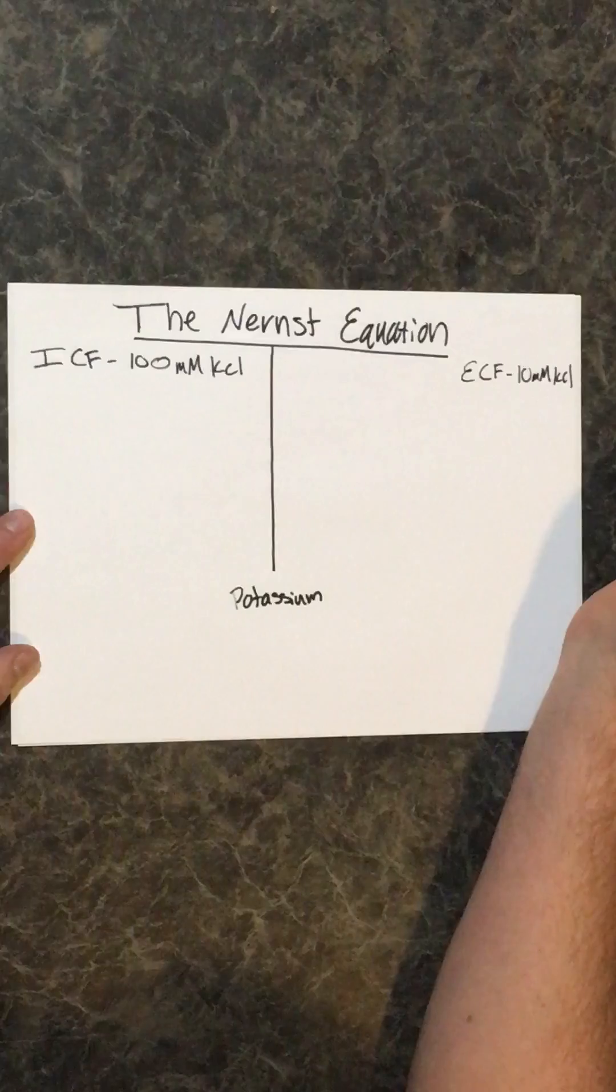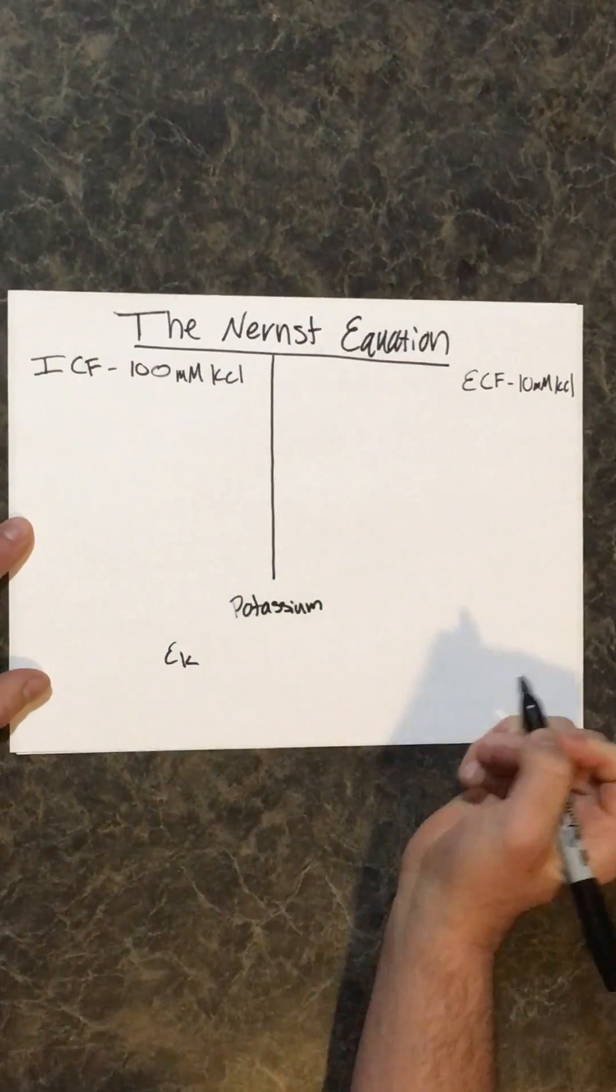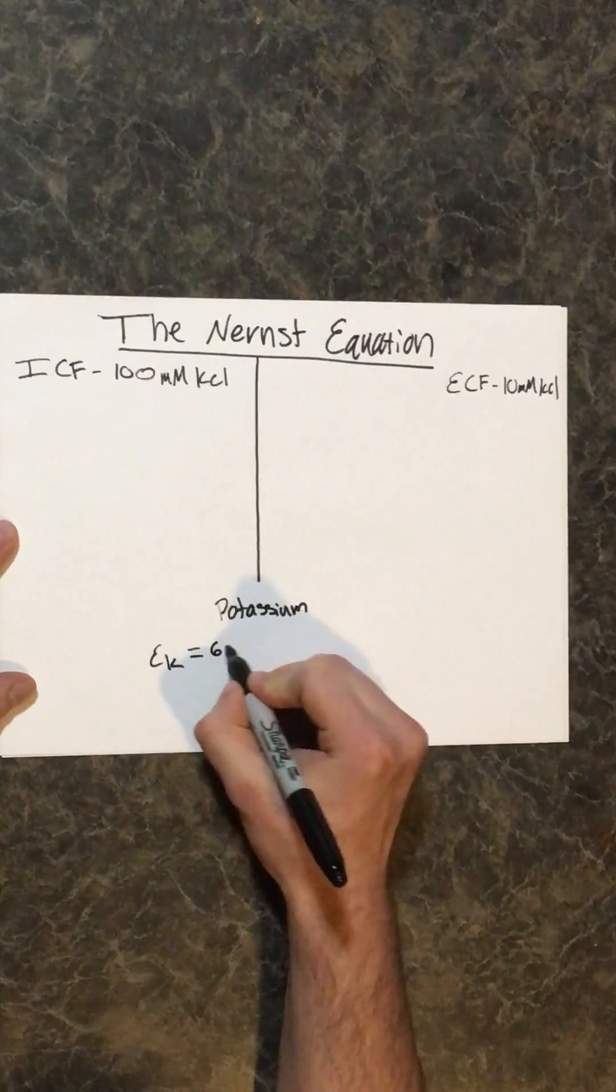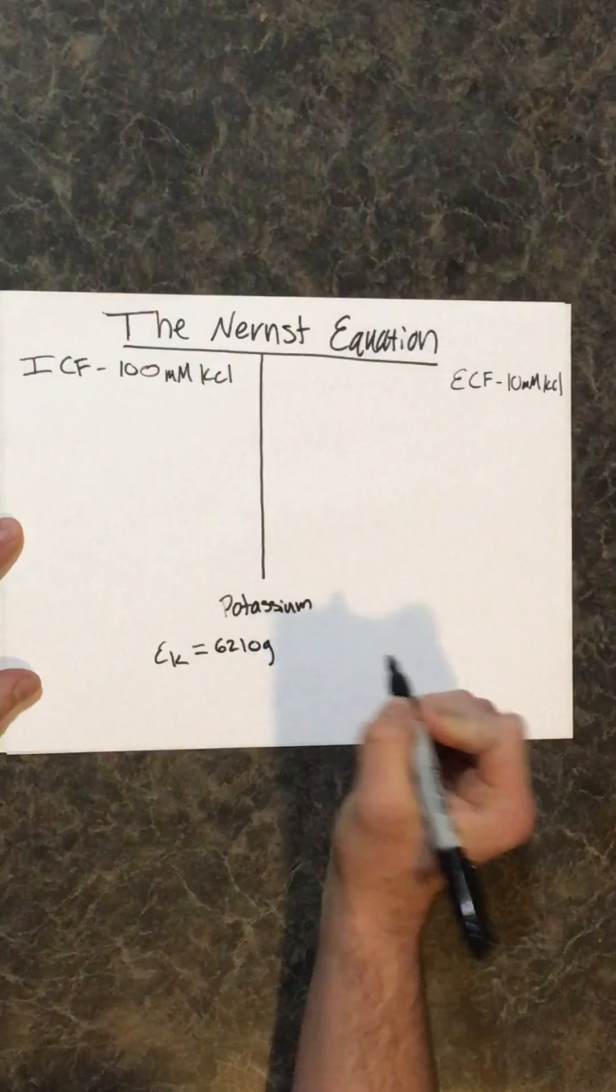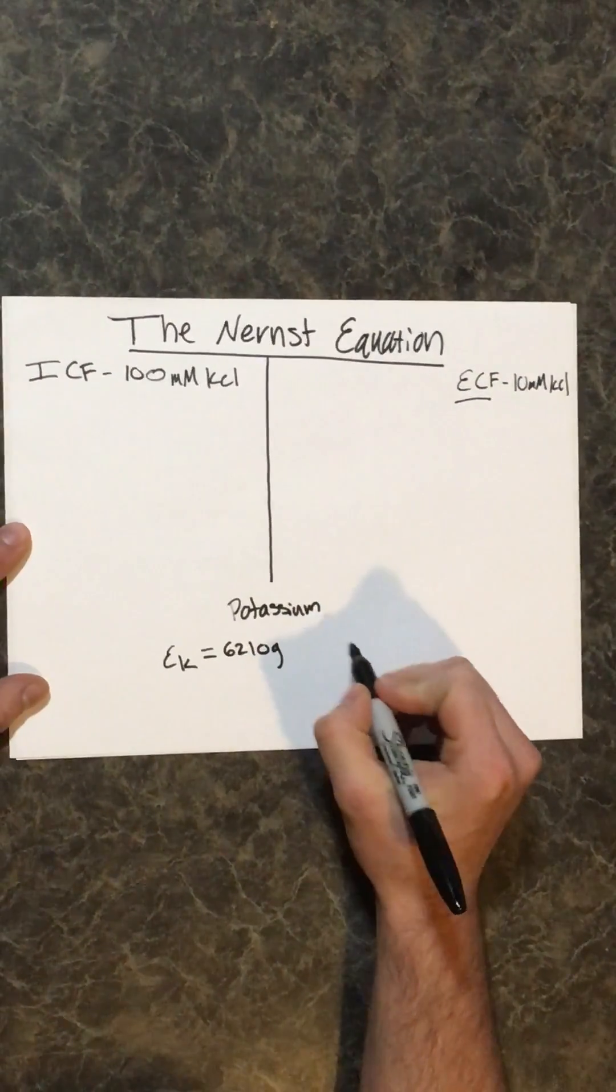Now to solve for the Nernst equation, the Nernst equation sets the equilibrium potential of the ion you're solving for, in this case potassium, equal to the 62 log of the ECF, or the extracellular fluid concentration.